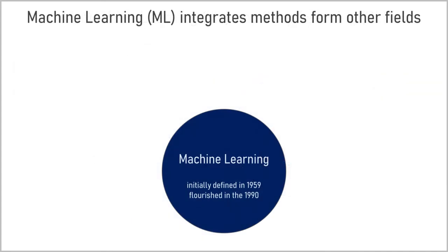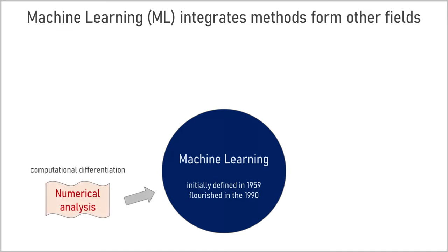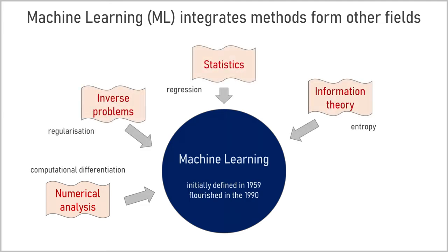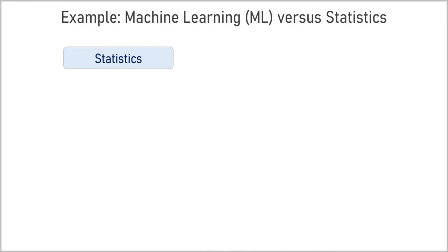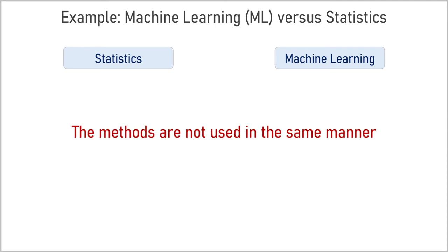Machine learning has integrated and adapted methods from other fields, for example from numerical analysis for computational differentiation, from inverse problems, statistics, information theory, signal processing, and other domains. Let's take an example of statistics and machine learning. In medicine and biological research, statistical approaches are absolutely essential and widely used in the literature. One may ask why we need machine learning in addition to statistics, especially if sometimes they share the same methods. In statistics and machine learning, the methods are not used in the same manner.